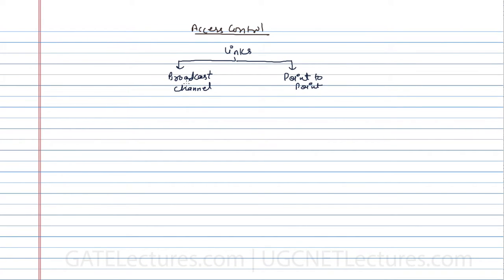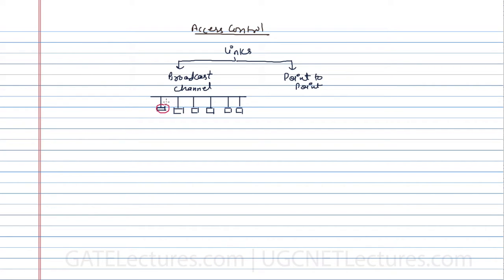What do we mean by broadcast channel? Broadcast channel means if in a network there are more than one computers or hosts which are attached — as you can see in this case we have six hosts connected. If this computer wants to send data to all the other systems, it can broadcast it. That is called broadcasting: a single point sending data or communicating with more than one host.